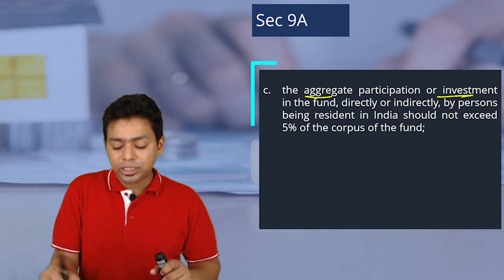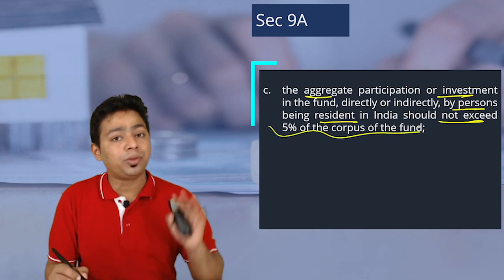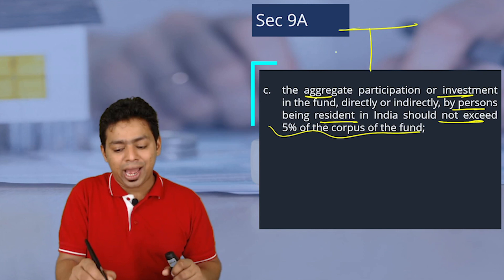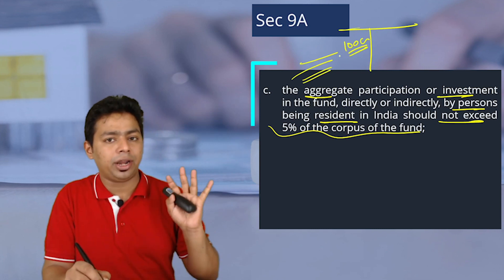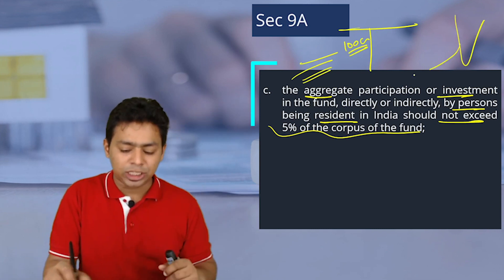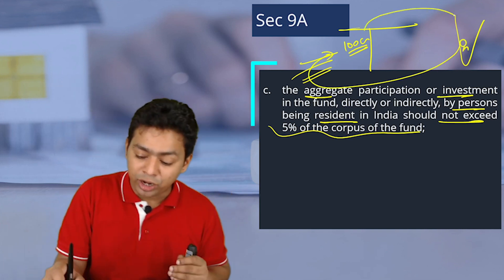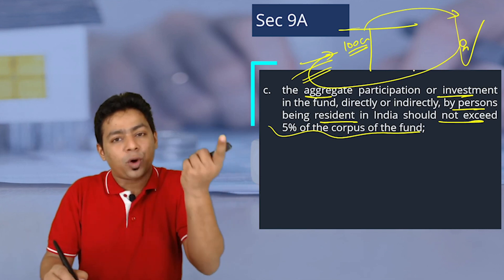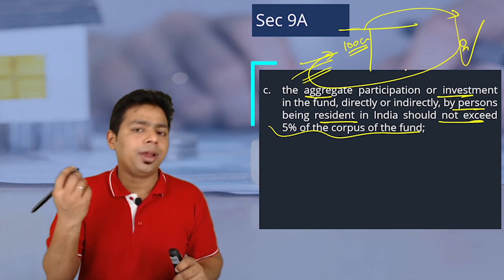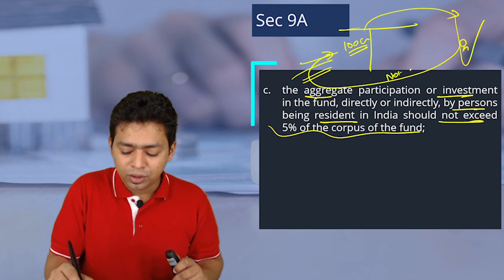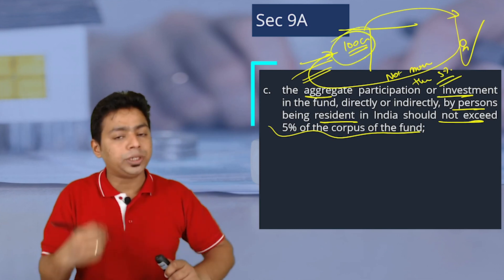Next condition: the aggregate participation in the fund, directly or indirectly, by a person being a resident in India should not exceed 5% of the corpus fund. Indians can invest in this foreign mutual fund, but not more than 5% of the total corpus. If there are 100 crore collected, somebody in India can invest, but there is a possibility of manipulation — all Indians might try to take benefit — so Indian resident participation is capped at not more than 5%.